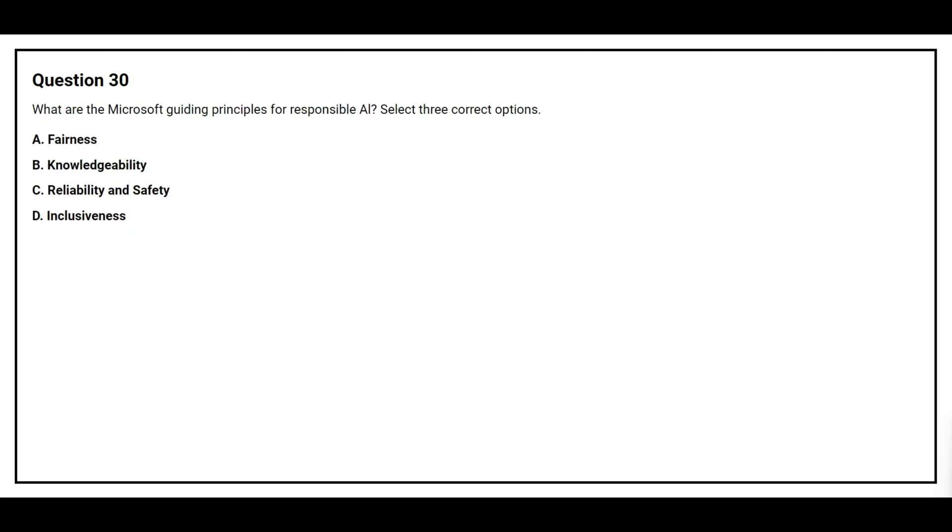Question number 30. What are the Microsoft guiding principles for responsible AI? Select three correct options. Option A, fairness. Option B, knowledgeability. Option C, reliability and safety. Option D, inclusiveness.